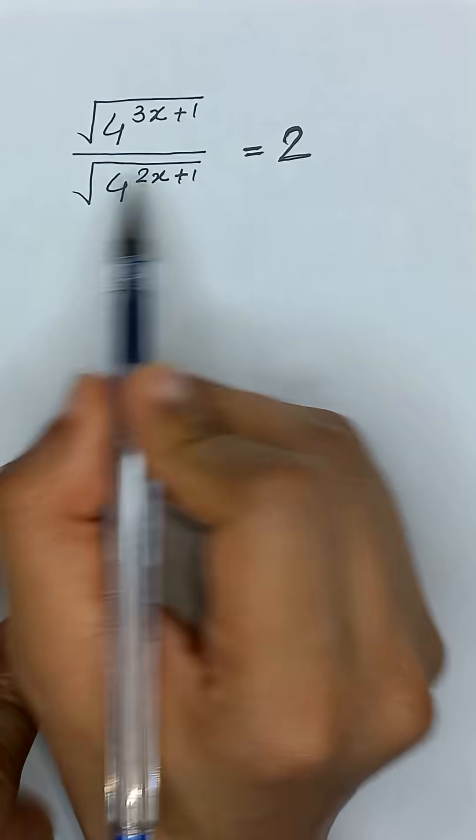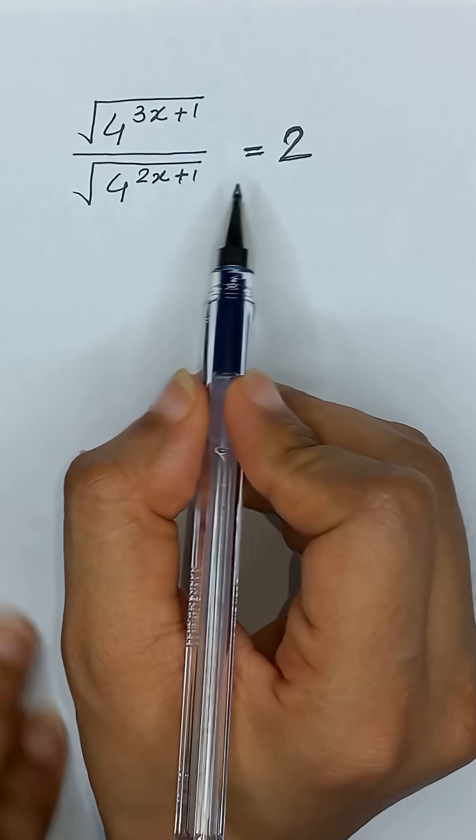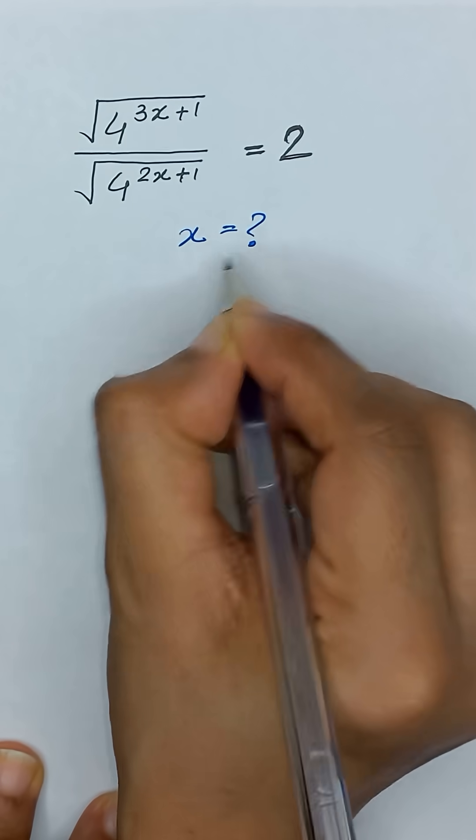Square root of 4 to the power 3x plus 1 divided by square root of 4 to the power 2x plus 1 is equal to 2 and we will solve for x.